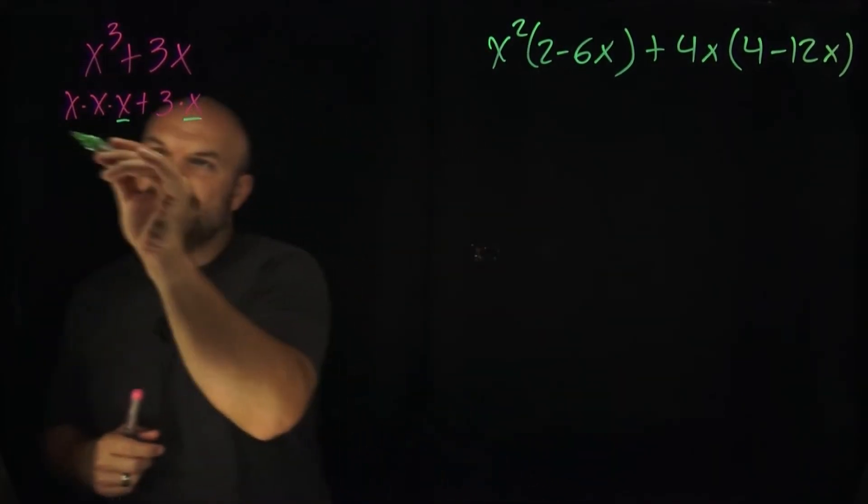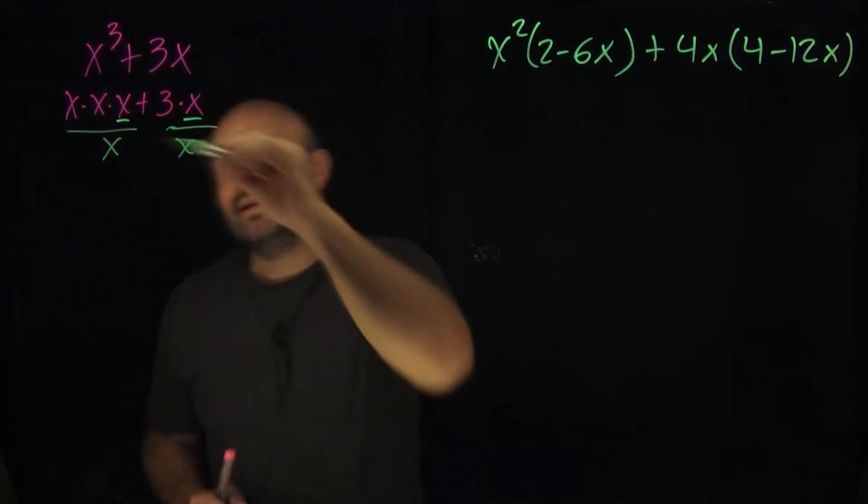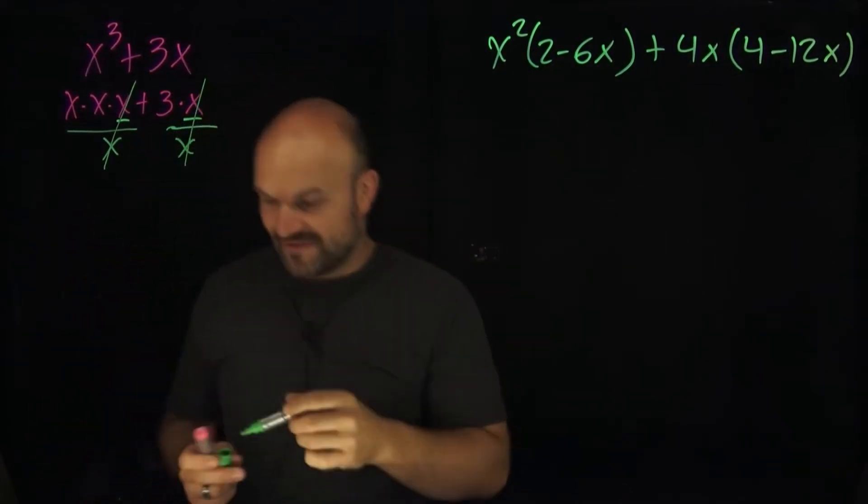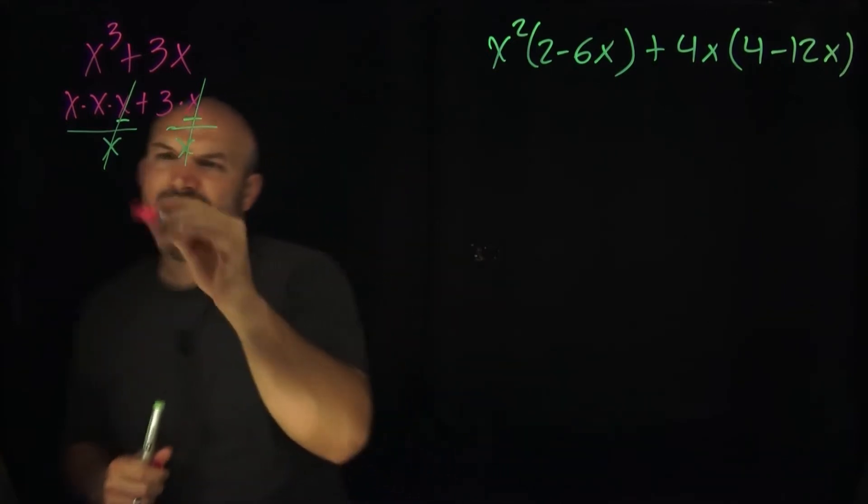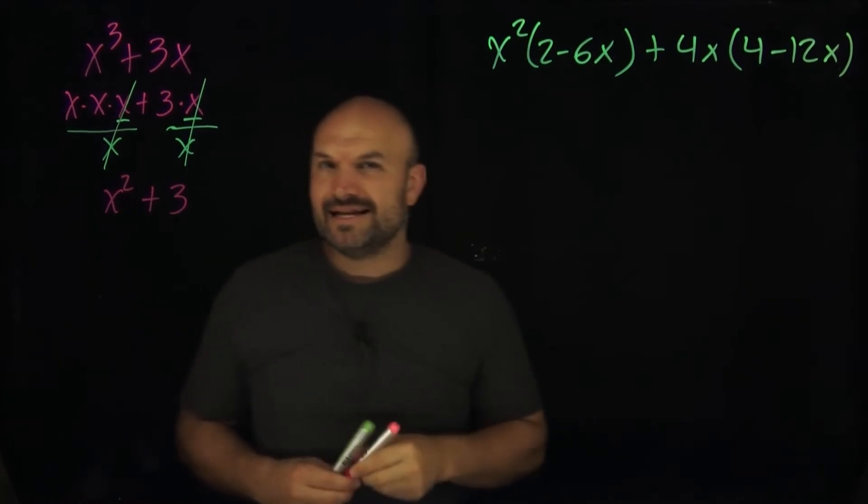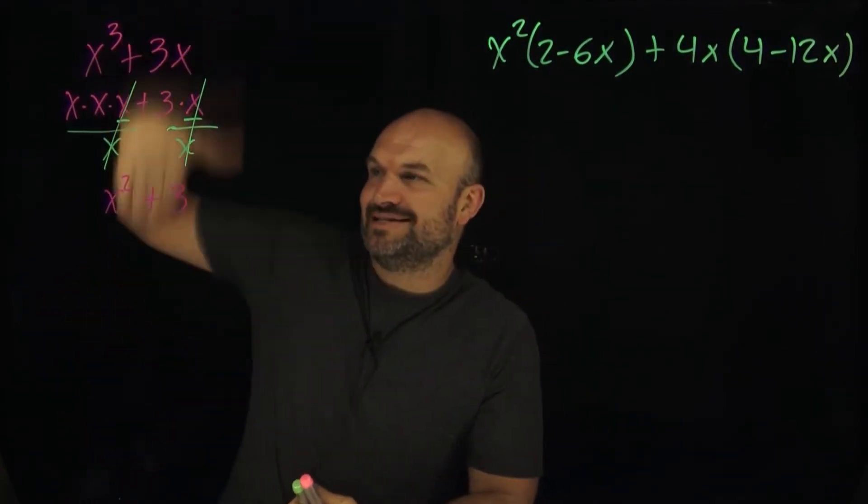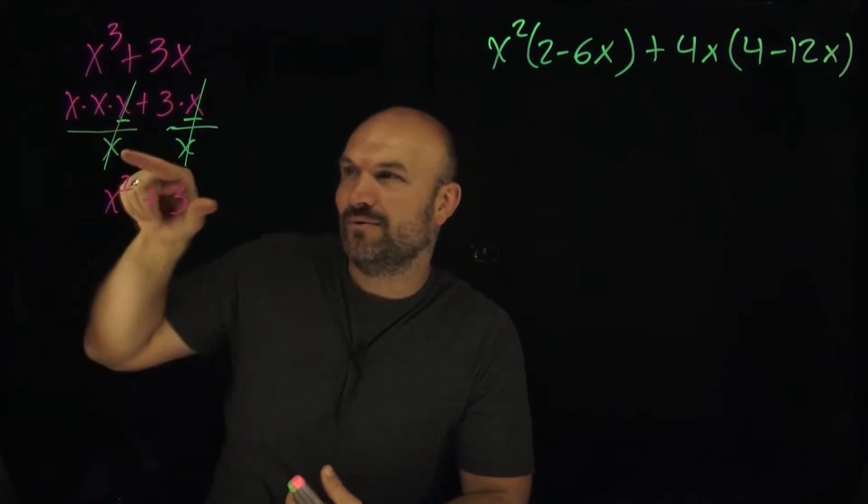When I go ahead and divide by x by both of these, because that's what they have in common, these x's now are going to divide out and I'm left with x times x squared plus 3. A lot of students will just leave it there and say they're done, but does x cubed plus 3x equal x squared plus 3? No. So where did this x go?